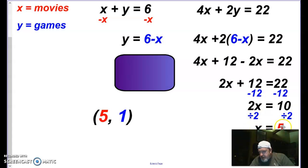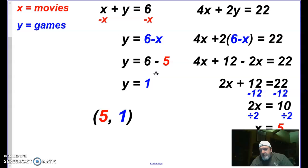And I will get 2X equal to 10. Then I can divide by 2, and X is 5. At that point, I can plug this 5 back in here for X. And so 6 minus 5 is 1. So we know all told, we rented 5 movies and 1 game. The total of that being $22.